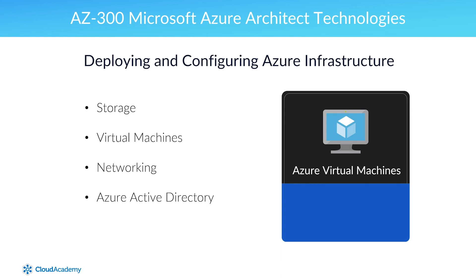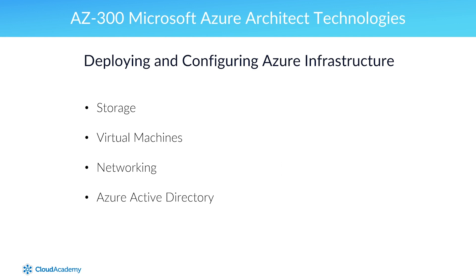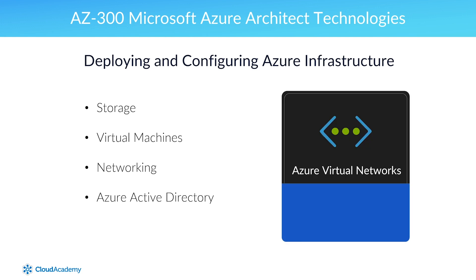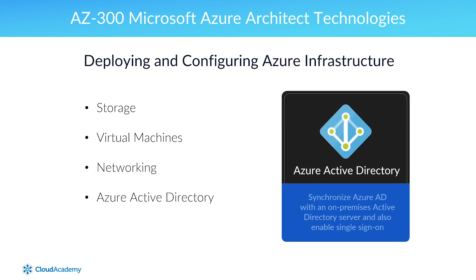For example, in addition to knowing how to create a virtual machine, you also need to know how to make it highly available, and how to automate VM deployment using Azure Resource Manager. In the network area, you need to know how to connect virtual networks together using VNet peering and virtual network gateways. In the Azure Active Directory area, you need to know how to synchronize Azure AD with an on-premises Active Directory server, and also enable single sign-on.